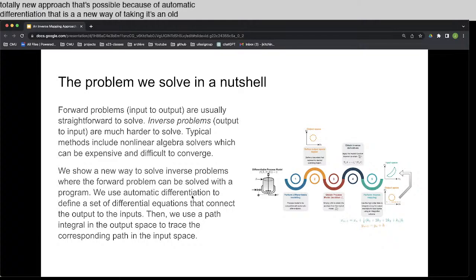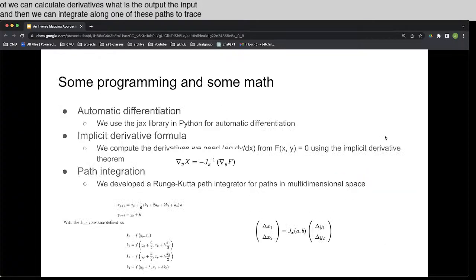And then we just integrate along a path in the output space. So over here is a little reactor that we can build a model of, we can calculate derivatives, what is d output d input, and then we can integrate along one of these paths to trace out the corresponding input space. All right, that's the nutshell idea that's in there.